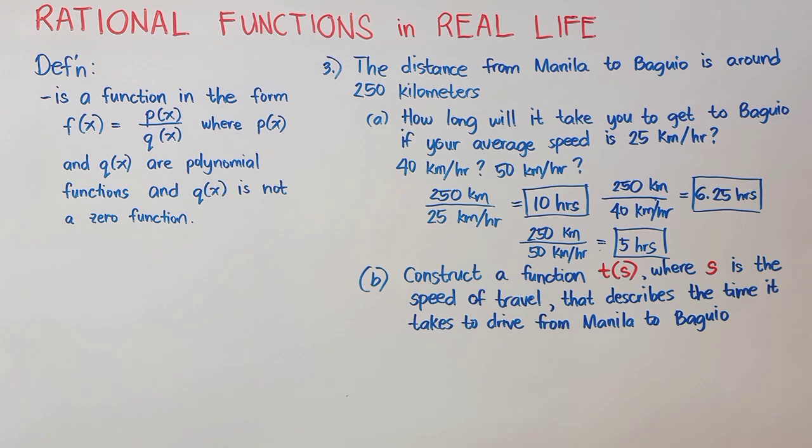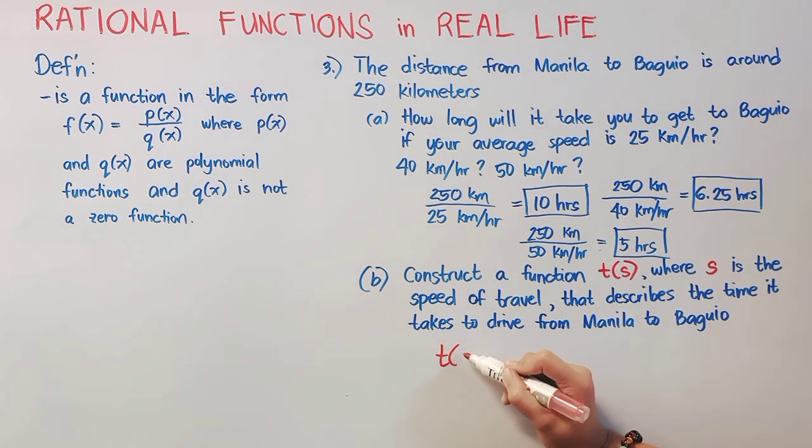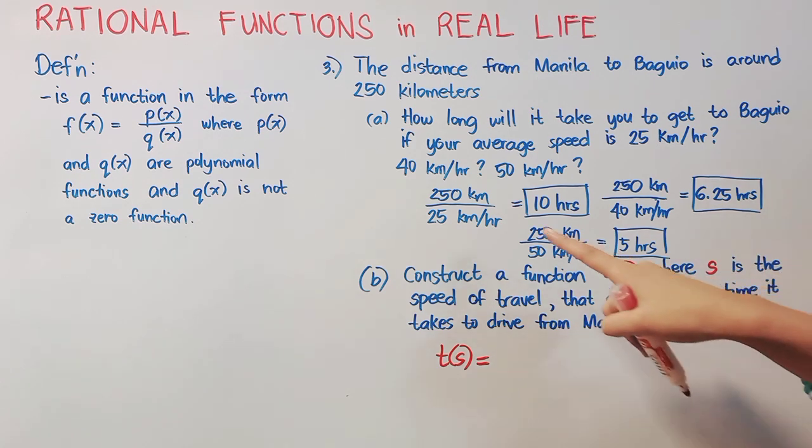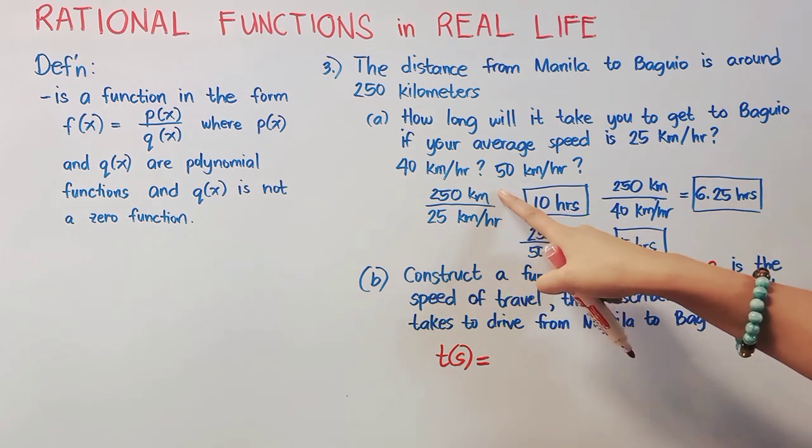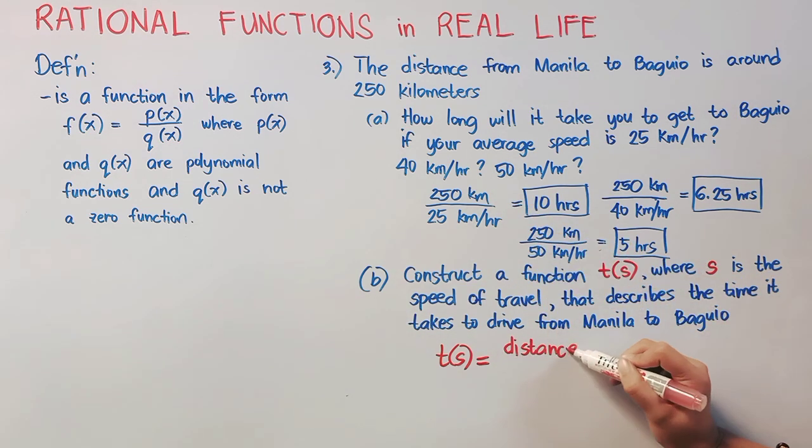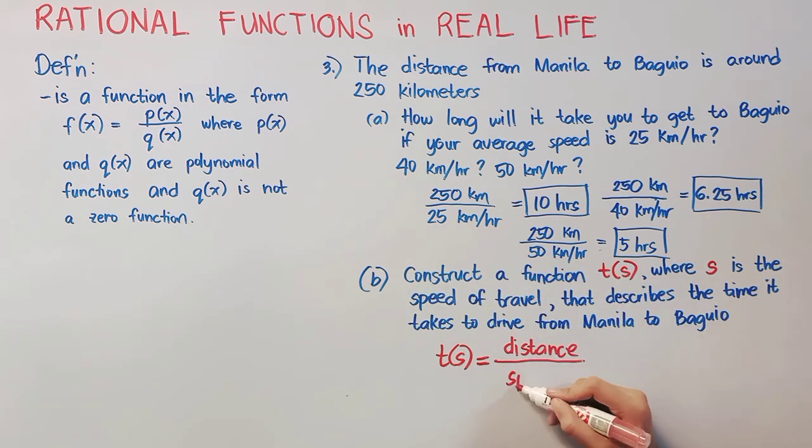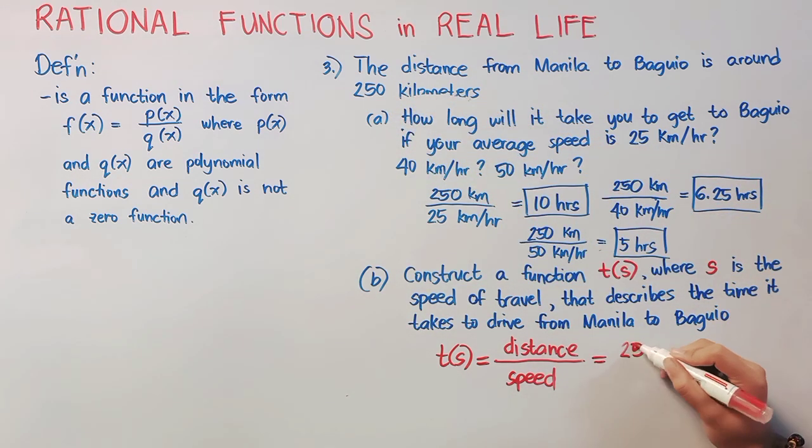Now, let's proceed to B. Construct a function T(S) where S is the speed of travel that describes the time it takes to drive from Manila to Baguio. Now, to get our function T(S), we have to go back to our answers in A. We have here 10 hours, 5 hours, and then 6.25 hours. These are all our travel time when we divided the distance and the average speed of travel. Now, since our distance is fixed at 250 kilometers, we'll write it here, 250, over, our speed could vary, so we'll just have to write S, and this is our function.